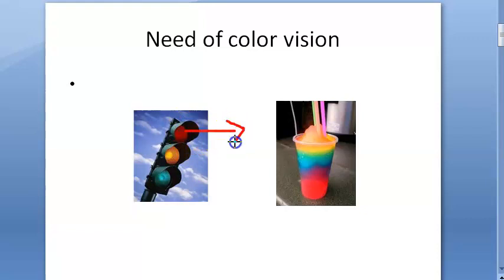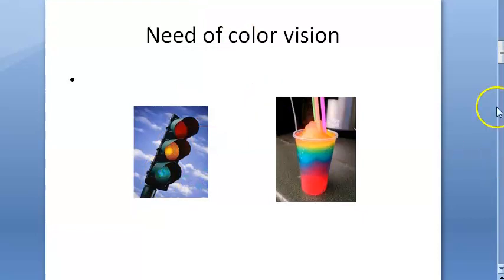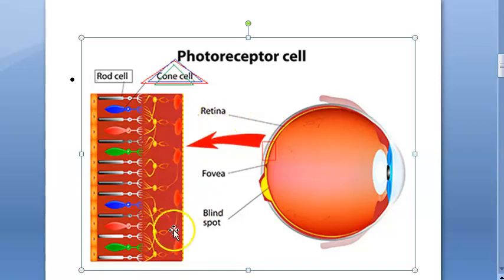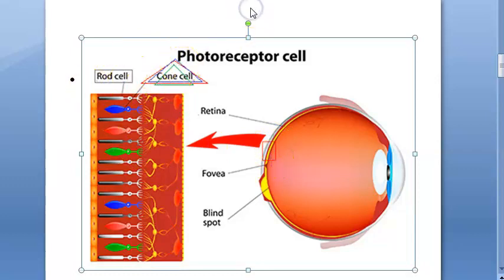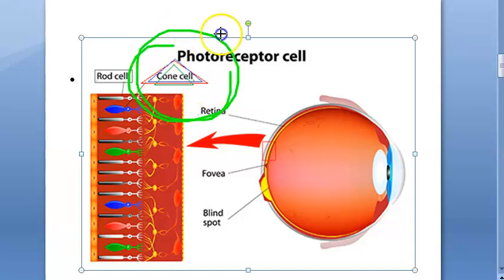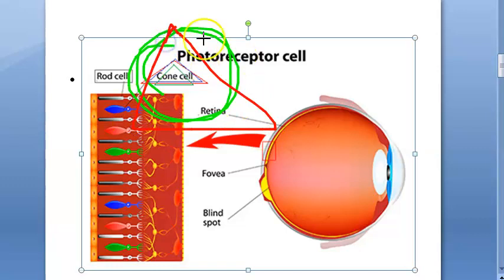In our eye, we have rods and cones in the retina. There are two types of cells: rods and cones. The cones are the ones that help in perceiving color. We have three types of cones - blue cones, red cones, and green cones - which help us perceive colors. The primary colors are red, green, and blue.